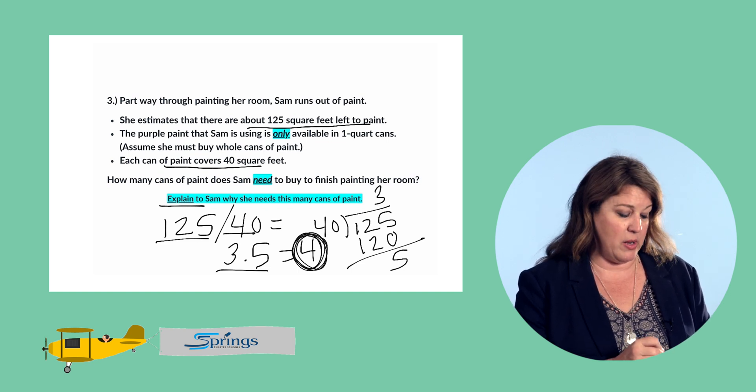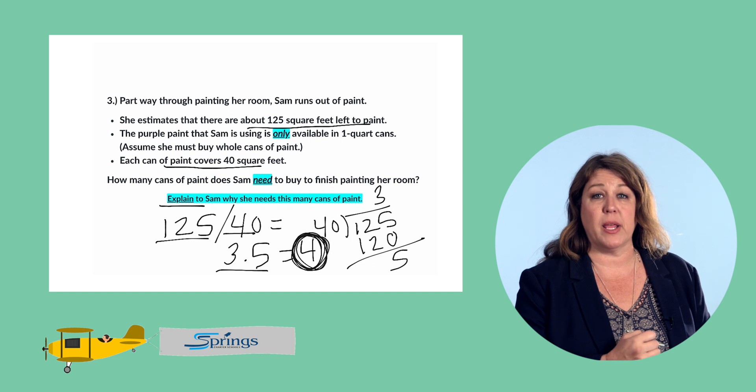She can't buy a partial can. We had to round up to four. She needs to buy four more cans of paint, and that's all that's needed to solve the problem.